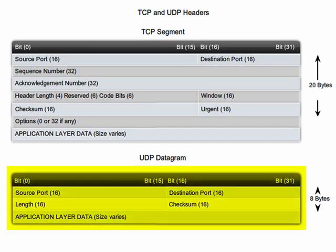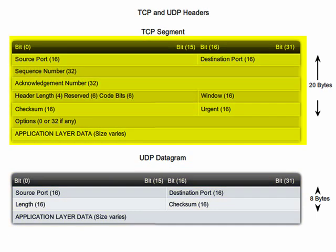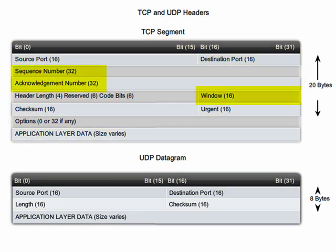UDP is a simple protocol that provides only basic transport layer functionality. The header information added to upper layer data by UDP is smaller than that added by TCP. UDP is not connection-oriented and does not provide the sophisticated retransmission, sequencing, and flow control mechanisms that are provided by TCP.